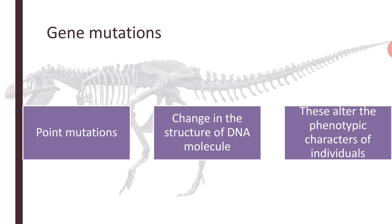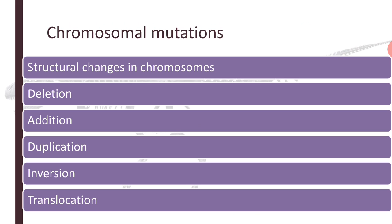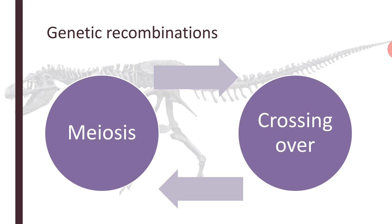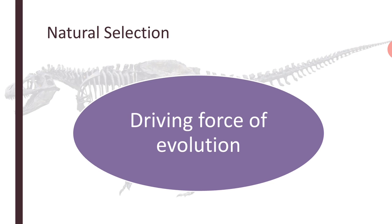Gene mutations are called point mutations because they occur at very minute levels; if the change occurs in more than one nucleotide, it becomes a gross mutation. Changes in the structure of the DNA molecule are called gene mutations, and these alter the phenotypic characters of individuals. Chromosomal mutations involve structural changes in chromosomes catalyzed by deletion, addition, duplication, inversion, and translocation. Genetic recombinations are possible only during meiosis, during gamete formation and crossing over. Natural selection is the driving force of evolution, providing a wonderful platform for it.